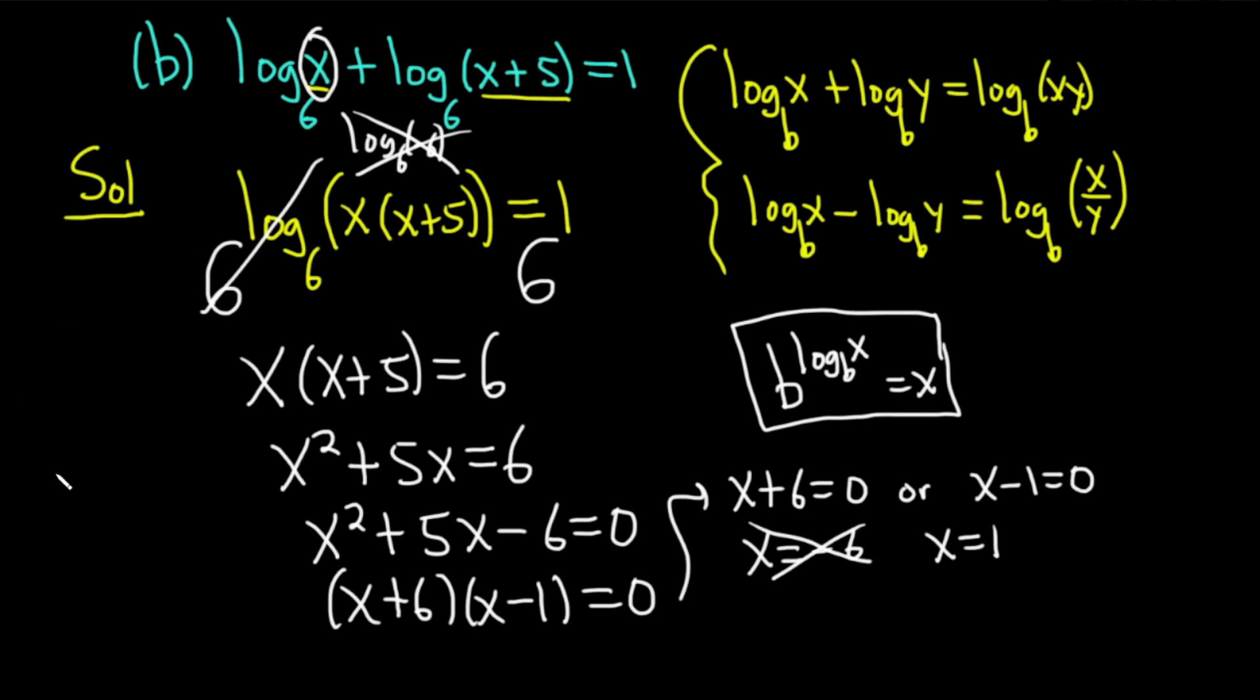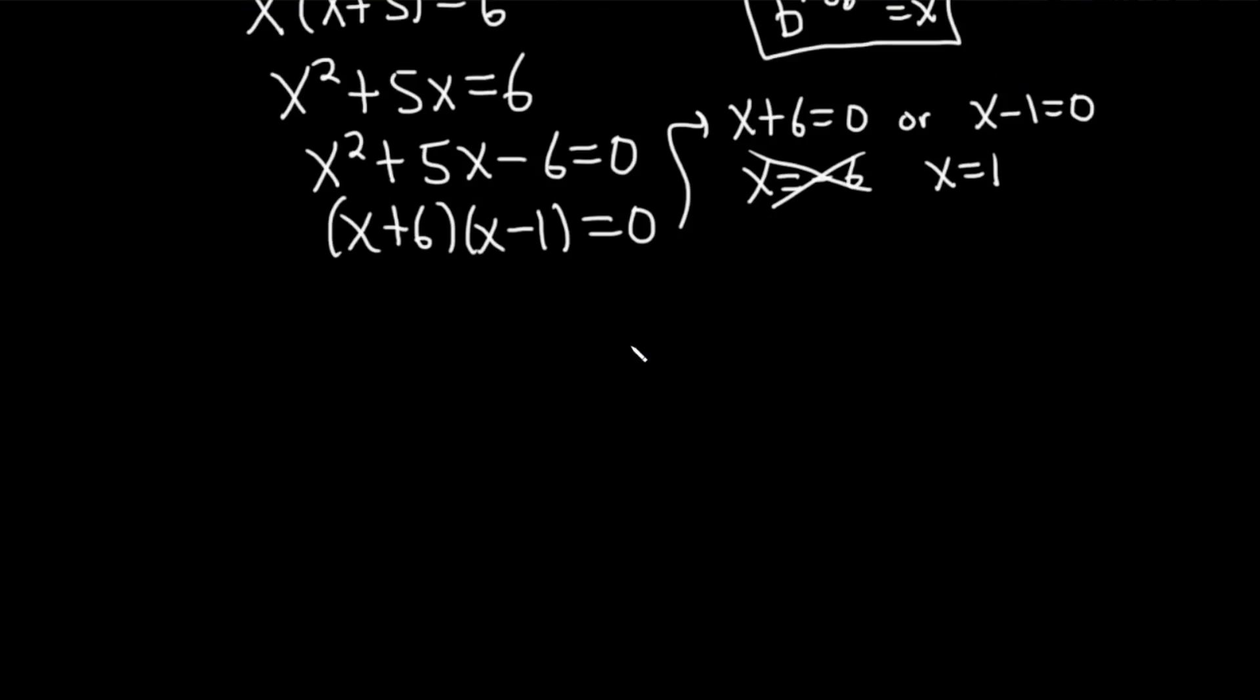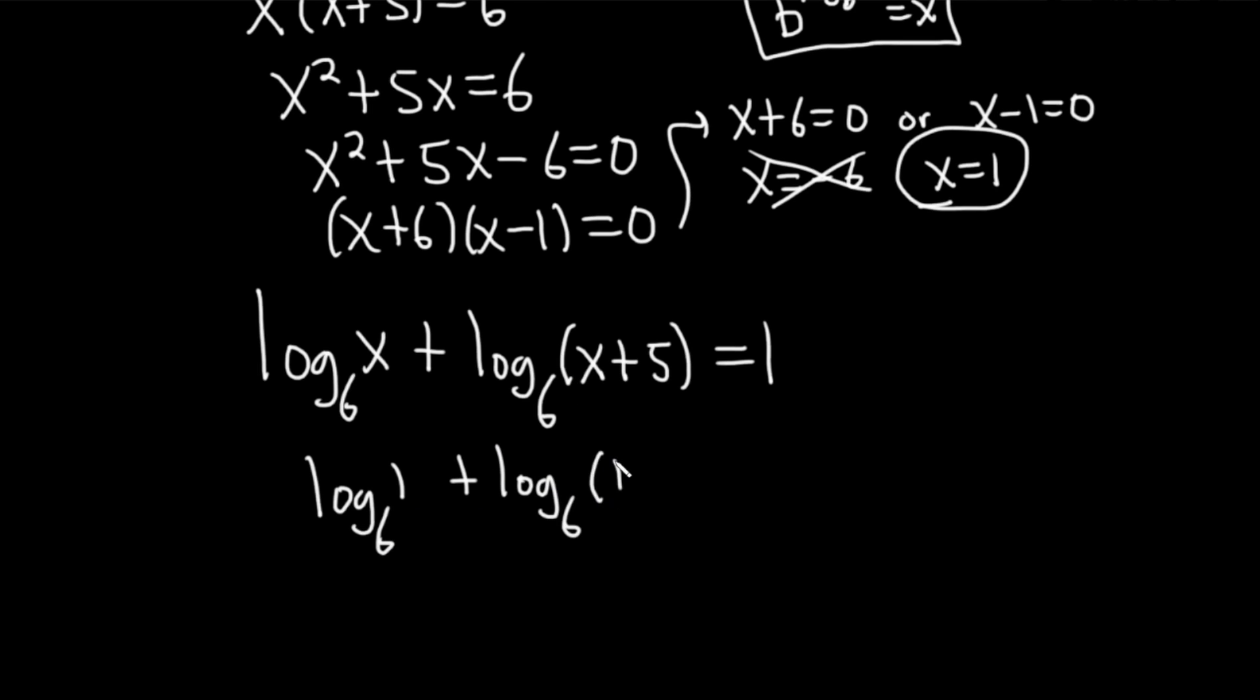What about 1? So if you check 1, I'm going to go ahead and write the equation down here because we're running out of room. We have log base 6 of x plus log base 6 of x plus 5, and that's equal to 1. And so if we're going to check 1, we're going to plug in 1 here for the x. It's really important to check your answers. And then plug in 1 here for the x.